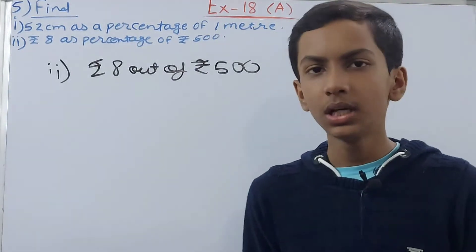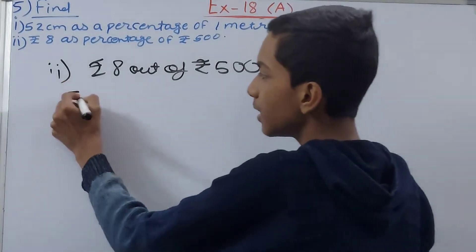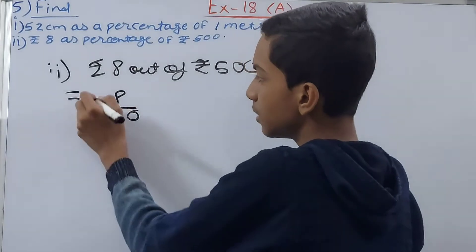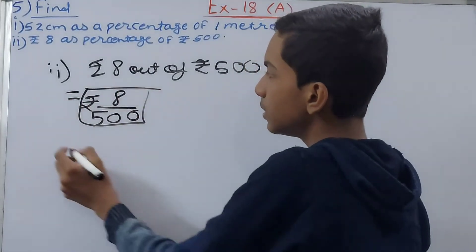Now here you see both of our quantities, 8 and 500, are in rupees, so we will keep it as it is. Don't convert anything. Now this can be written as 8 upon 500. This is rupees 8 upon 500.